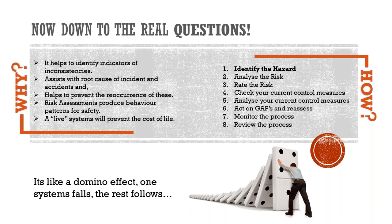How do you go about doing a risk analysis? Very simply: identify the hazard, analyze the risk using a matrix, rate the risk, check your current control measures, analyze them and make changes if needed, act on those gaps, and monitor and review the process as often as possible. Remember — a safety system is like a domino effect: when one system fails, the rest will likely follow.